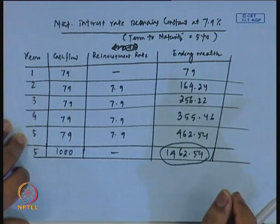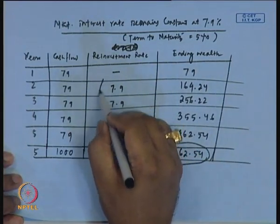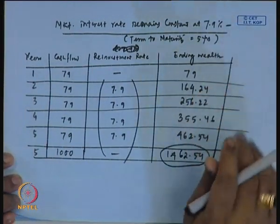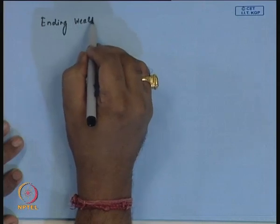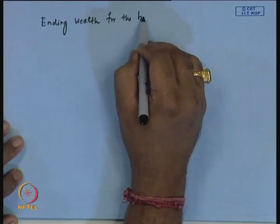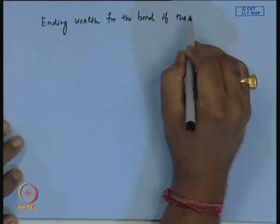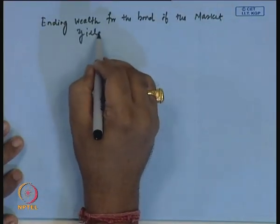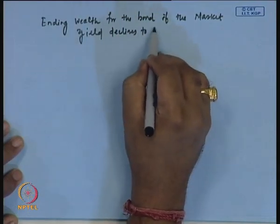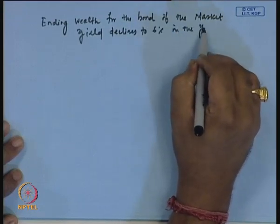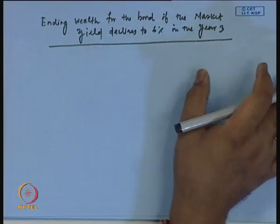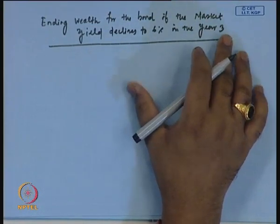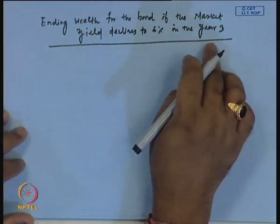This is the wealth ratio the investor has at the end of 5 years when the reinvestment rate remains constant — no change in the market interest rate. Now let us consider that the market interest rate has declined to 6 percent in year 3, with other things remaining the same in the first two years.